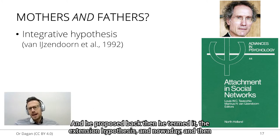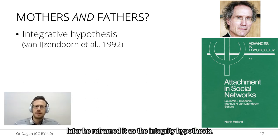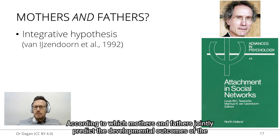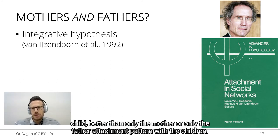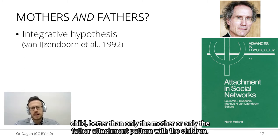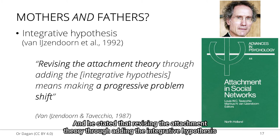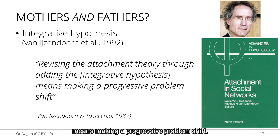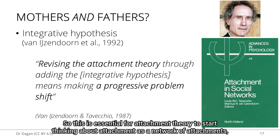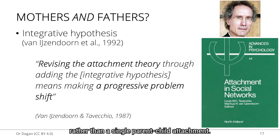He termed it the extension hypothesis, and later reframed it as the integrative hypothesis, according to which mothers and fathers jointly predict the developmental outcomes of the child better than only the mother or only the father attachment pattern. He stated that revising attachment theory through adding the integrative hypothesis means making a progressive problem shift — essential for attachment theory to start thinking about attachment as a network of attachments rather than a single parent-child attachment.